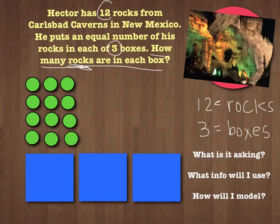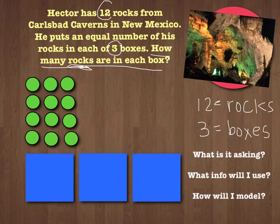So let's take a look at what we have. We have the 12 rocks right here, and then we have 3 boxes, because that's how we're going to model. We're going to draw the 3 boxes and then put the 12 rocks into the boxes, sharing them out equally.